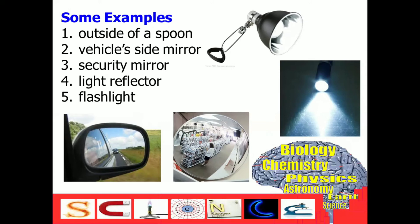For number 4 and 5, light reflectors and flashlights — this is where the diverging characteristic of a convex mirror is applied. The light coming from the flashlight will be covering a wider range, and so it is more convenient.